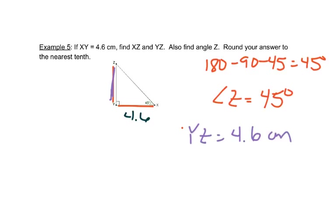So now let's talk about the hypotenuse. The hypotenuse then would be 4.6 times the square root of 2. The hypotenuse is XZ. Now it wants us to find the nearest tenth. So we're going to take 4.6 times the square root of 2.